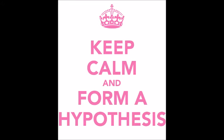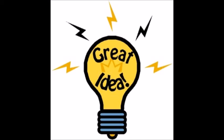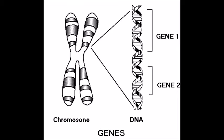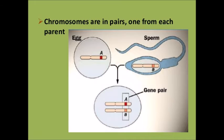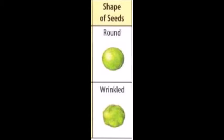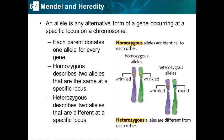Mendel came up with a hypothesis to explain this. His idea was that each trait was determined by two of what he called factors — today we call these factors genes. Each pea plant inherited one of these factors from each parent. Mendel also came to the conclusion that there were different forms of these factors. For the factor that determined seed shape there were at least two different forms — today we call these different forms of a gene alleles. For the gene that determines seed shape there is an allele that causes the seed to be smooth and another allele which causes the seed to be wrinkled.